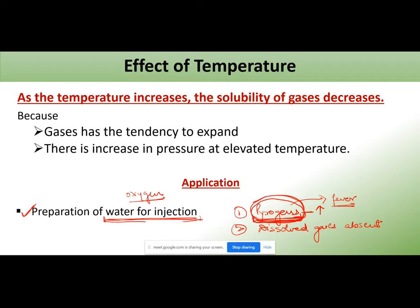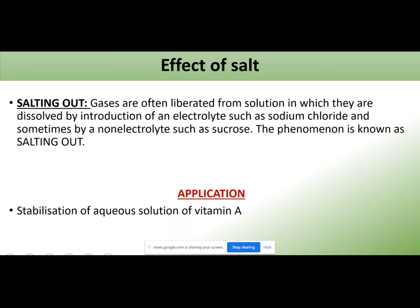Water for injection is prepared from distilled water and is stored at nearly 80°C. At 80°C, gases like oxygen and nitrogen have very low solubility in water, so the water remains gas-free and can be safely used for reconstitution. This is the practical application of the effect of temperature on gas-liquid solubility.